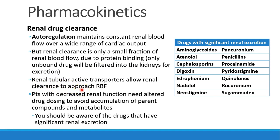Instead of relying solely on glomerular filtration, we need renal tubular active transporters — proteins that grab onto drug bound to protein and pump it into renal cells for elimination. If patients have renal disease or decreased renal function, we may need to change drug dosing to avoid accumulation of the drug and its metabolites. Drugs with significant renal excretion include antibiotics like cephalosporins and penicillins, vancomycin, neostigmine, sugammadex, and several others.